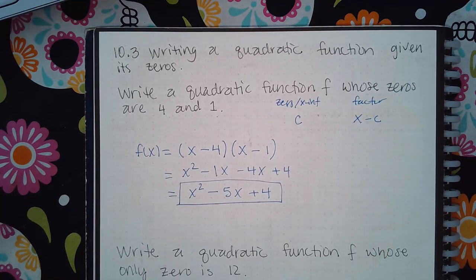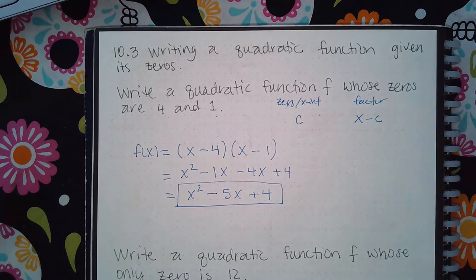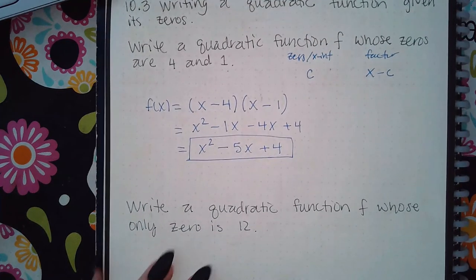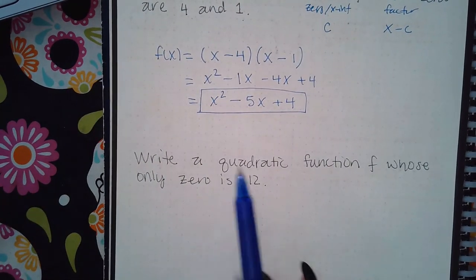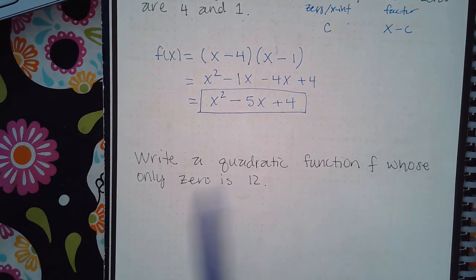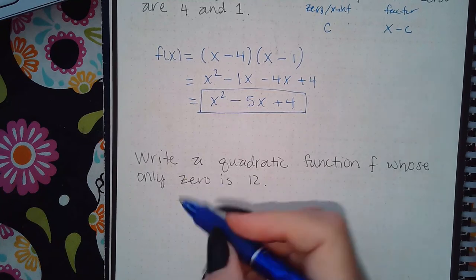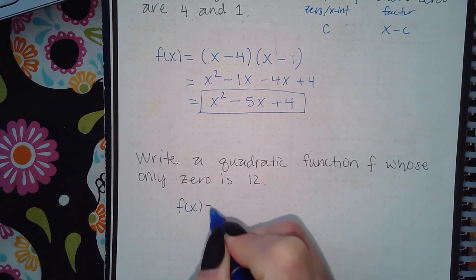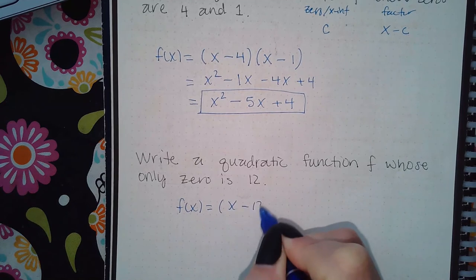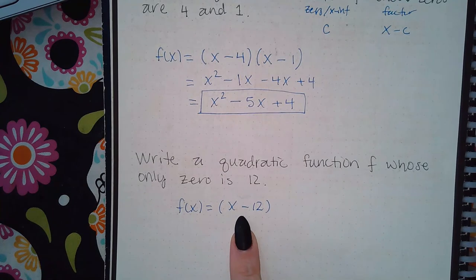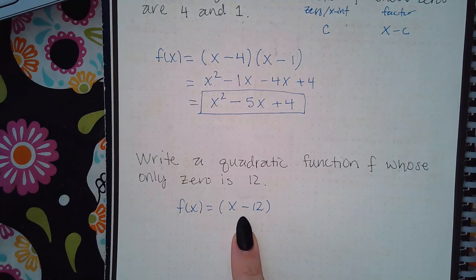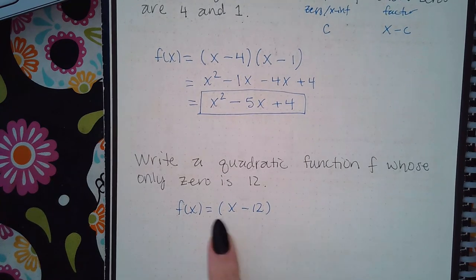Here's another example where it wants a quadratic function whose only zero is 12. The function would look like x minus 12 using the opposite sign, but this by itself is not a quadratic. You need x squared for it to be a quadratic.